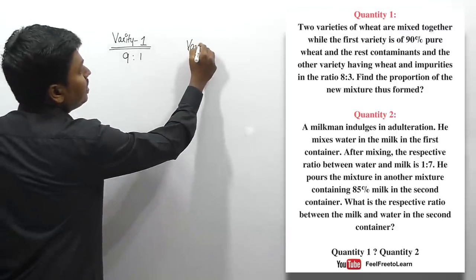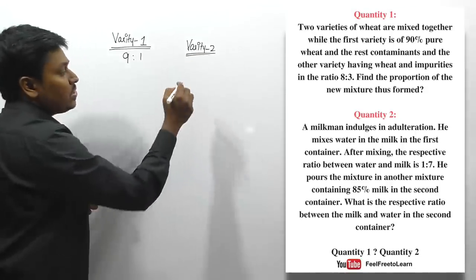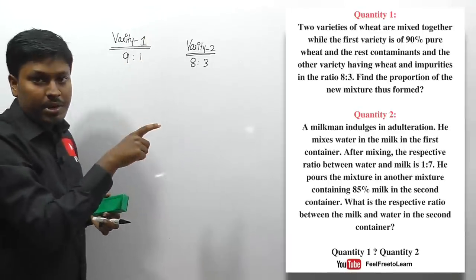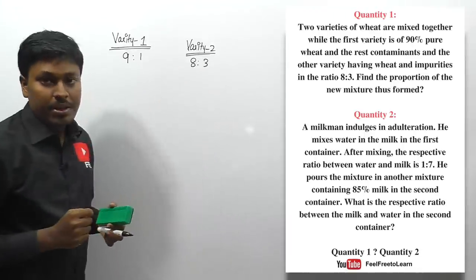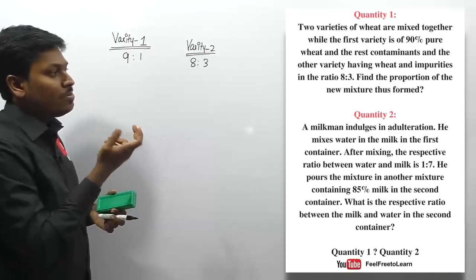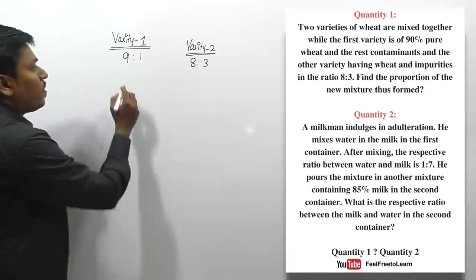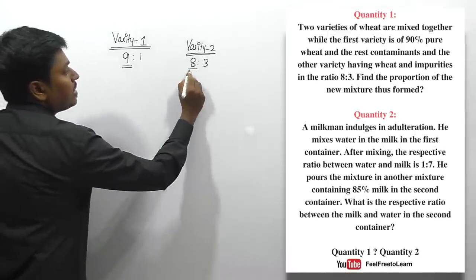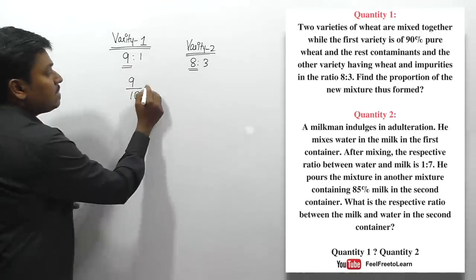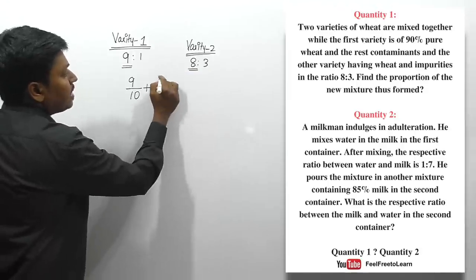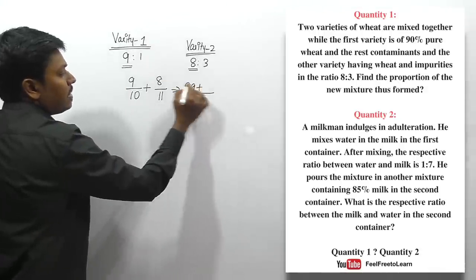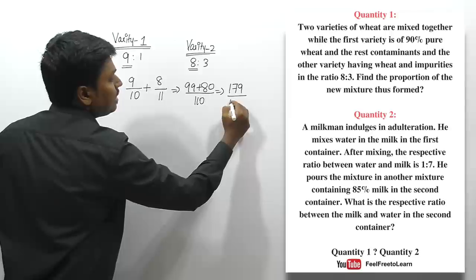In the first variety, 9 parts are wheat and 1 part is impurities; in the second variety, 8 parts are wheat and 3 parts are impurities. Both varieties are mixed. To find the ratio in the new mixture, wheat fractions are 9/10 and 8/11. Taking LCM of 110: (9/10) = 99/110 and (8/11) = 80/110, giving total wheat = 179/110.